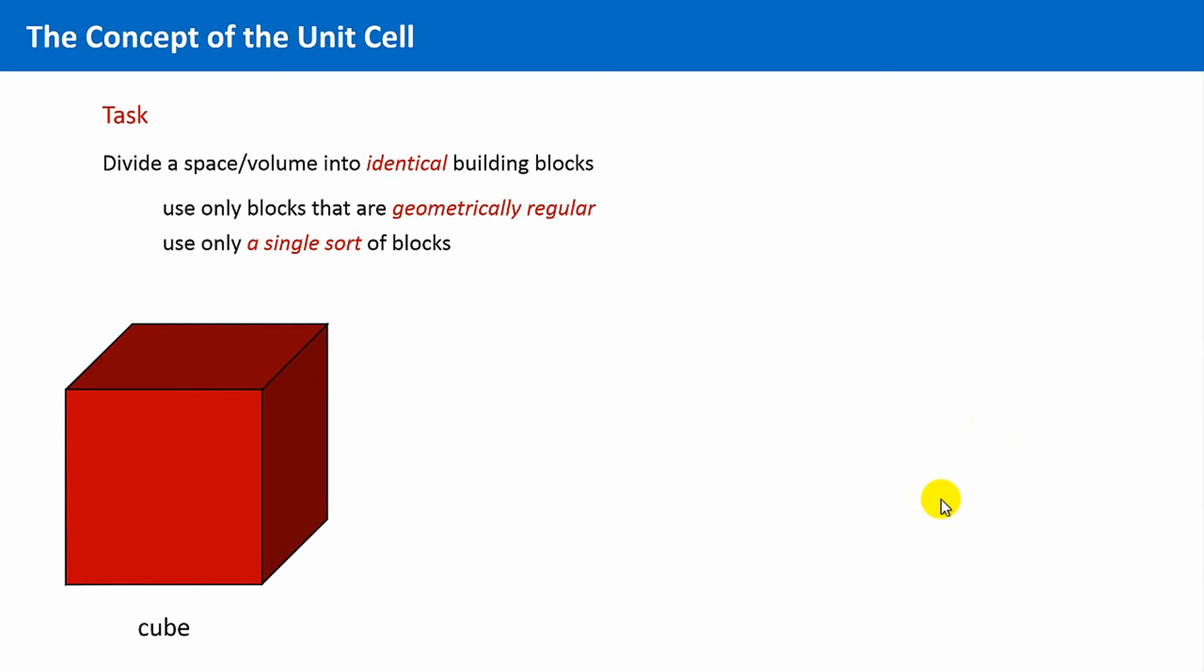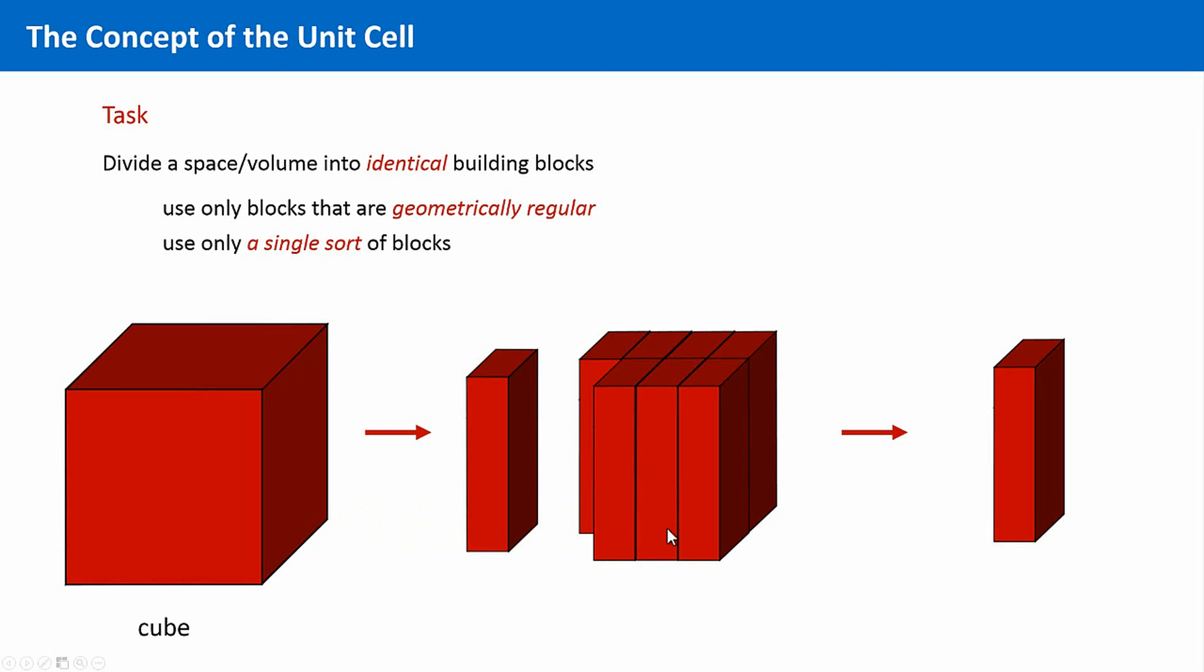Yet another possibility to divide this big cube into identical building blocks is shown here. This deconstruction process leads to rectangular prisms as building blocks. Everything is orthogonal again, but all edges differ in length.